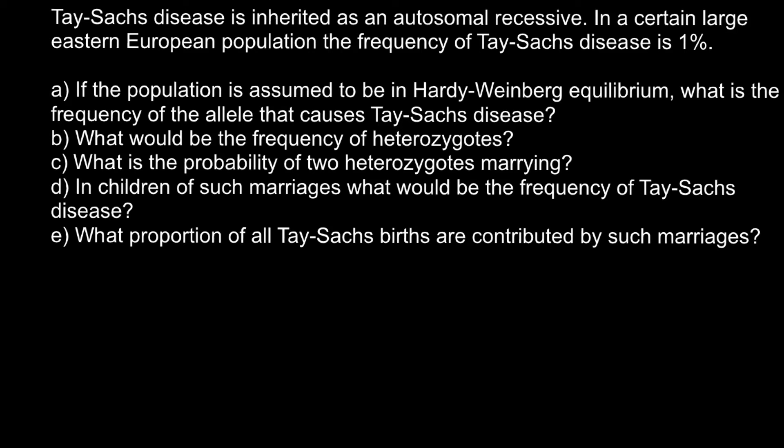Hello and welcome to Nikolai's genetics lessons. Today's problem is: Tay-Sachs disease is inherited as an autosomal recessive in a certain large Eastern European population. The frequency of Tay-Sachs disease is 1%. This is unrealistic numbers — in the United States there are about 20,000 new cases each year, meaning real numbers would be about 150 times smaller than what we have in our problem.